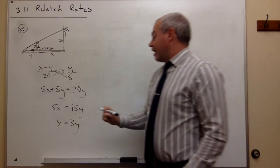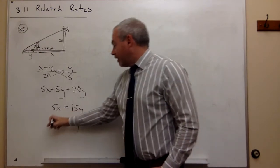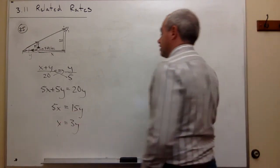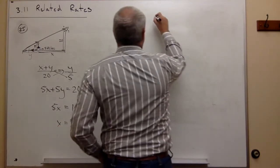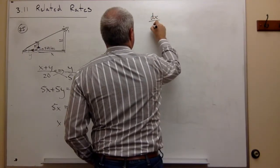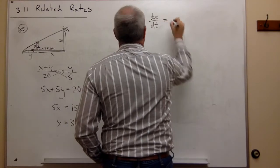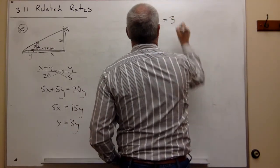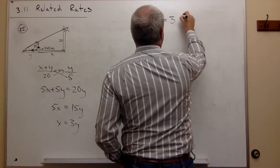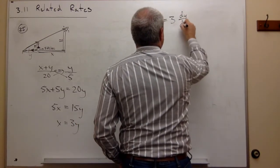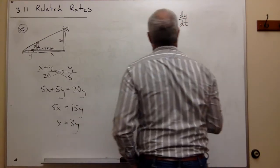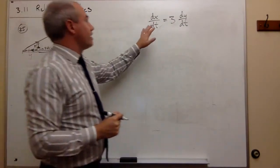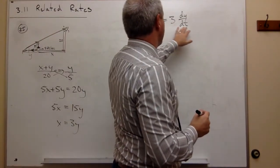Now I can take the derivative of x = 3y with respect to time. The derivative of x gives dx/dt. On the other side, the 3 hangs around and the derivative of y gives dy/dt. So we have dx/dt is equal to 3 dy/dt.